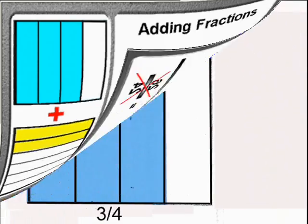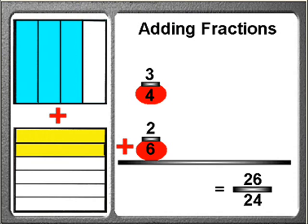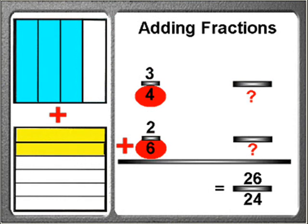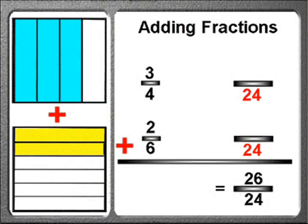When adding the fractions three-fourths and two-sixths, one needs to first look at the bottom numbers of each of these two fractions. In this example the bottom numbers happen to be four and six. Now think of a number that four and six can both fit into. Since four times six is equal to twenty-four, I know for sure that twenty-four is a number that four and six can both fit into.